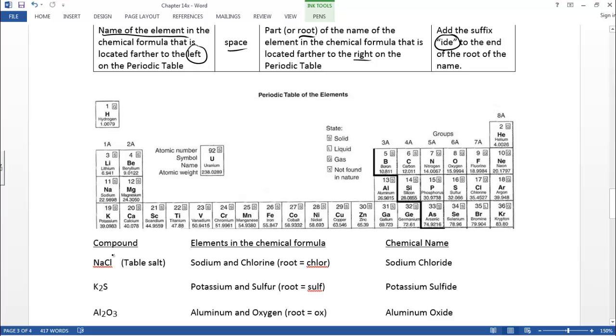And for many compounds, that will make the name. So here's some examples. Table salt has a chemical formula NaCl. So Na is over here. That's sodium. So first element sodium. Cl, that's over here. That's chlorine. And then what we're going to do is just grab the chlor. That's the root. And then fashion the name. You've got the element name sodium. Take the chlor. There's the chlor. And add IDE. Sodium chloride.